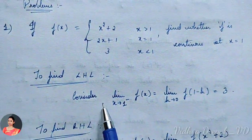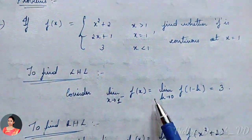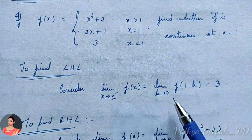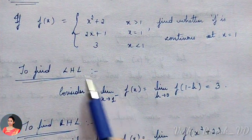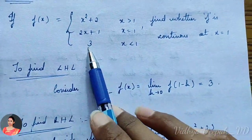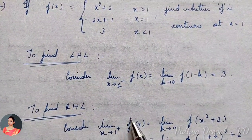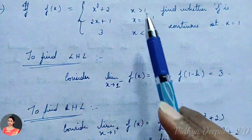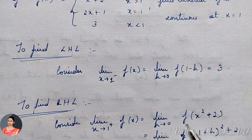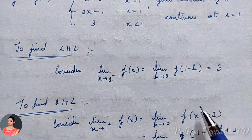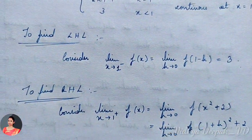First, we find the left-hand limit. The left-hand limit is: limit as x tends to 1⁻ of f(x) = limit as h tends to 0 of f(1 − h). Since x < 1 for the left-hand limit, f(x) = 3, so directly LHL = 3. For the right-hand limit, x > 1, so we use f(x) = x² + 2. We substitute x = 1 + h, giving limit as h tends to 0 of (1 + h)² + 2.